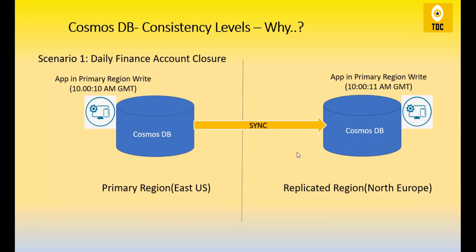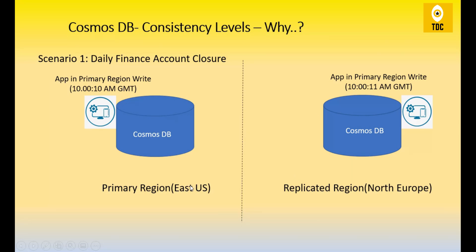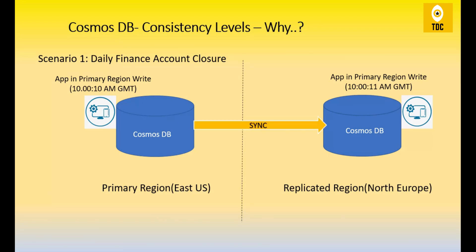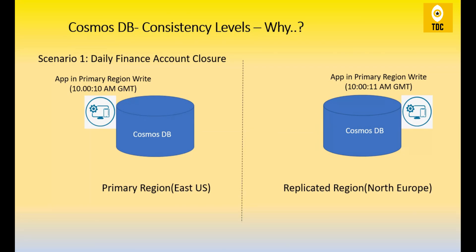Now let's imagine we are replicating data to a secondary region. In this example, the primary region is East US where our Cosmos DB is provisioned, and the secondary region is North Europe where data is being replicated in real time. Let's take scenario one: daily finance account closure is needed, meaning a finance manager needs to consolidate global reports and close accounts for a particular day.